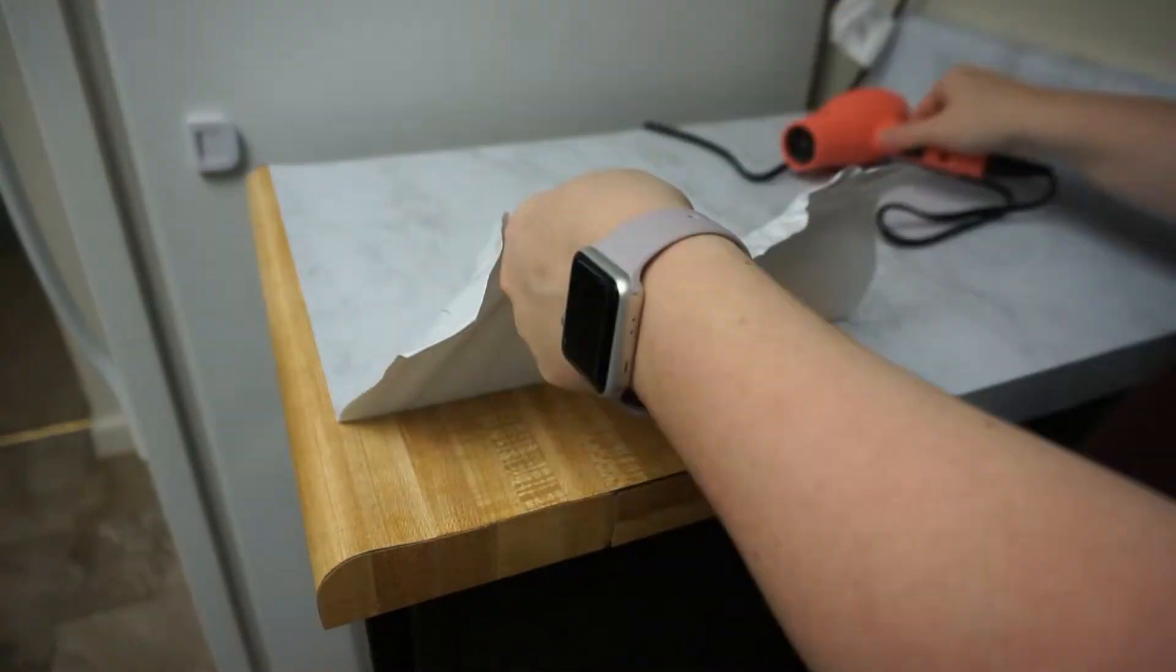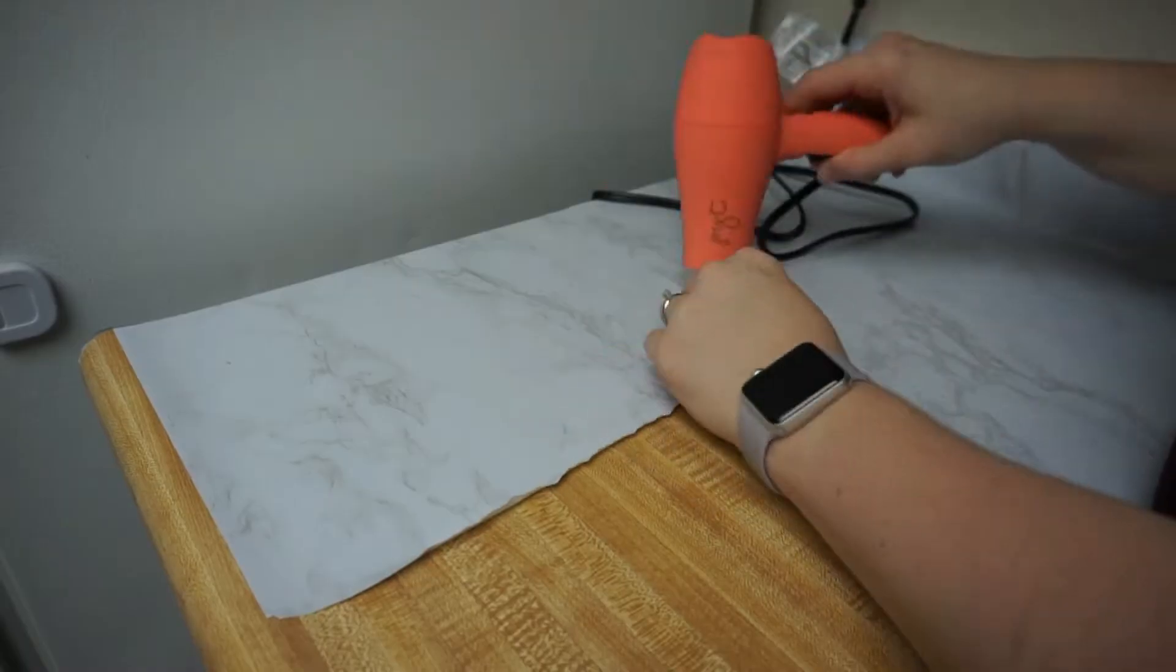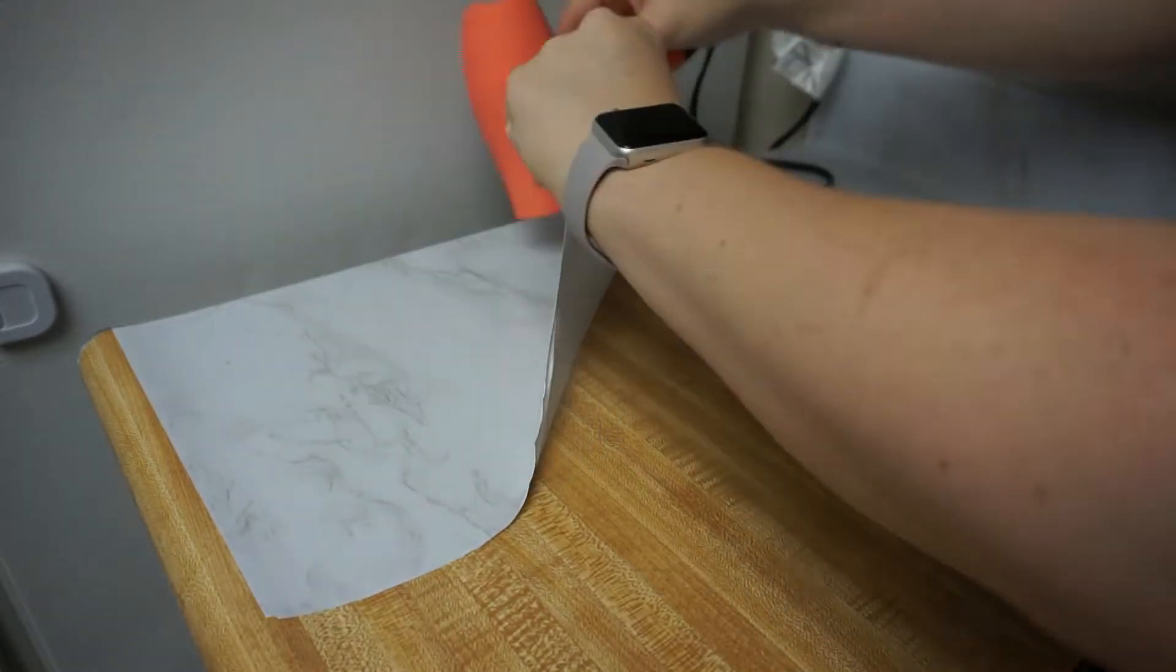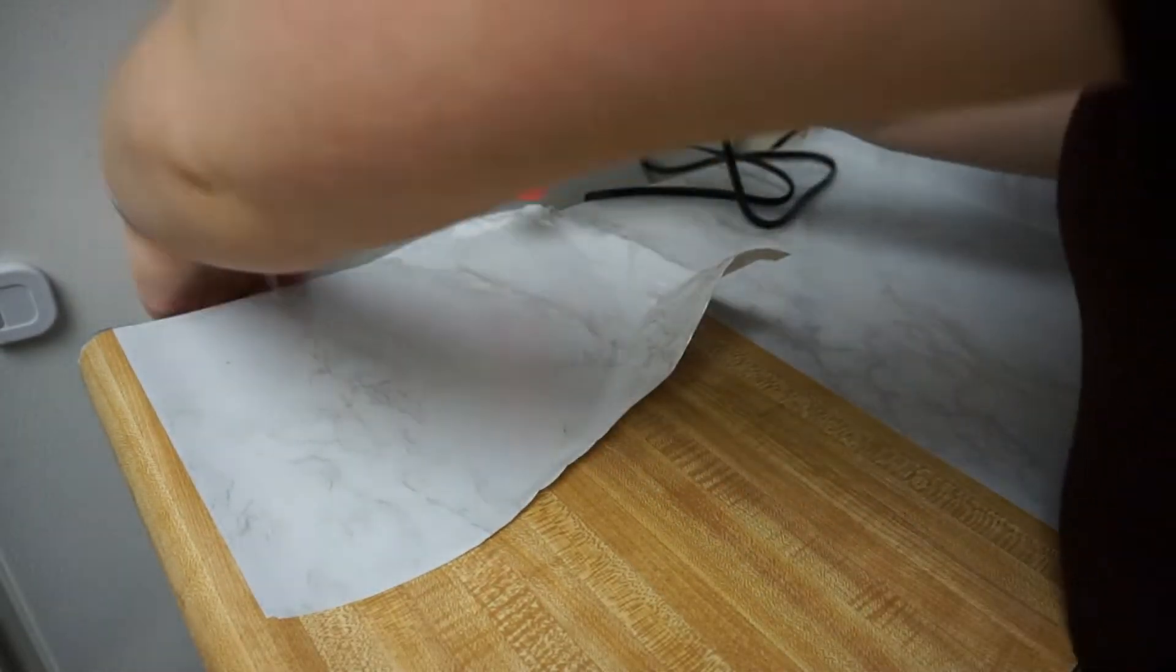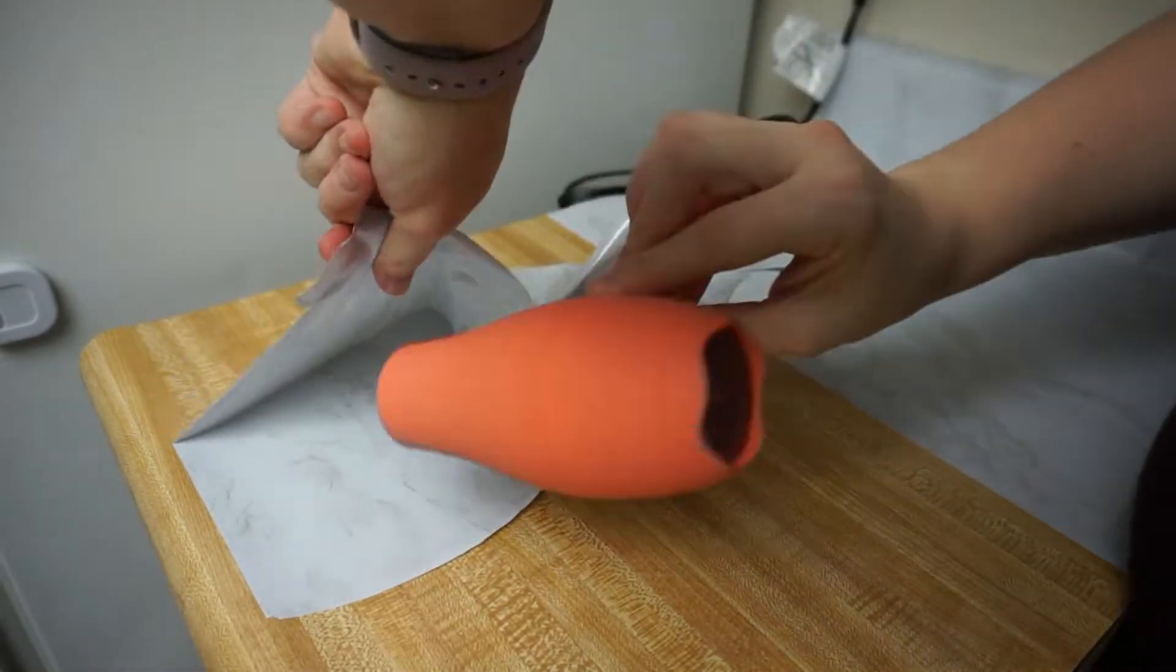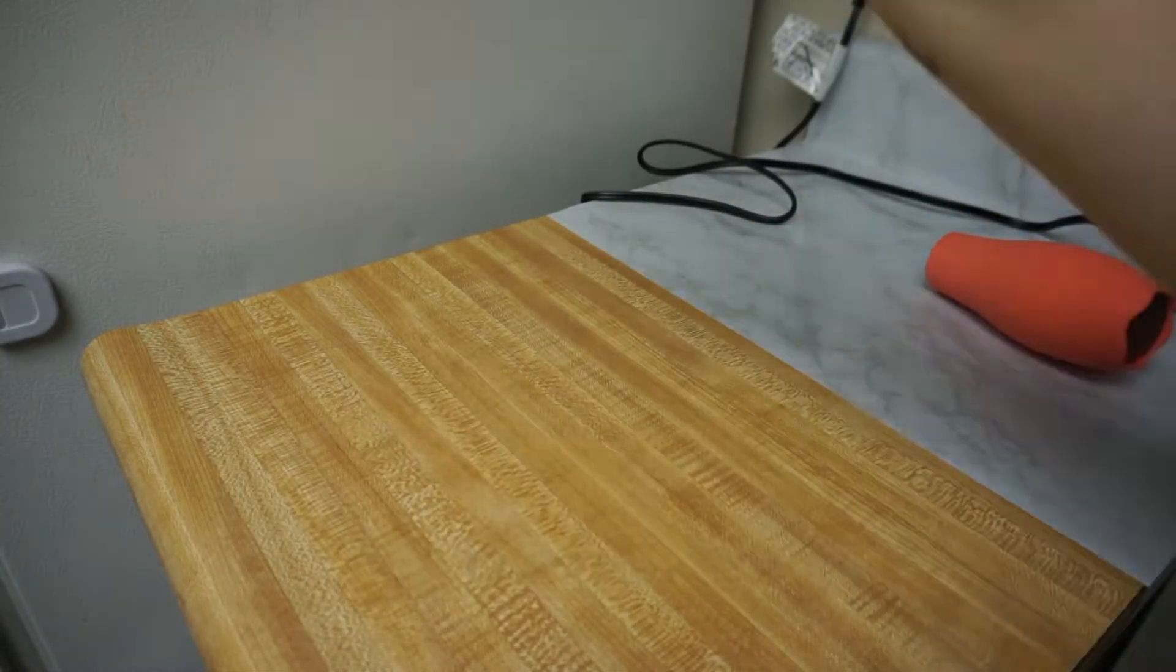...like it starts to melt as you see right there, and it just makes it a little bit harder. But like I said, this one was a little bit easier. I already knew before I did this that there was going to be some stuff left behind from the adhesive whenever I did decide to remove the paper.